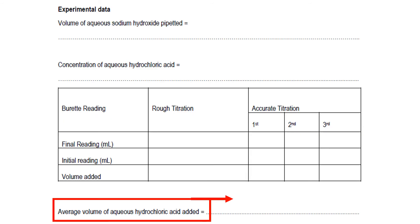Your lab report should look like this. They can ask you for the volume of aqueous sodium hydroxide pipetted, concentration of aqueous hydrochloric acid solution, and then this is the table where you must record all the readings from your rough titration and accurate titration. To find the average volume of aqueous hydrochloric acid, you must add the volumes from the accurate titration value 1, value of volume added B, and then value C, and divide by 3 to get the average results.